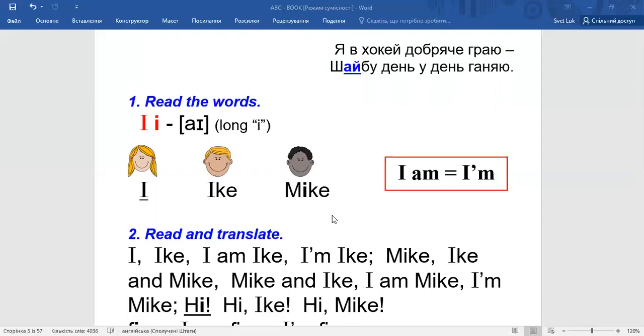Super! So, now I will return you back and let's look. This boy may say, I am Ike. It's a long form. Or he may say, I'm Ike. I'm Ike. Okay, let's look at Mike. Mike may say, I am Mike. Or he may say, I'm Mike. Repeat, please. Brilliant!